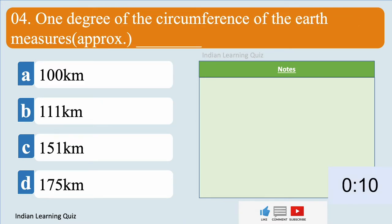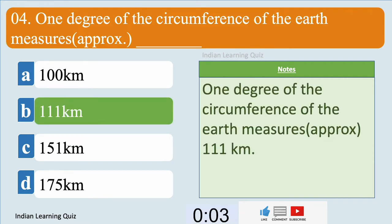One degree of the circumference of the Earth measures approximately 111 kilometers.